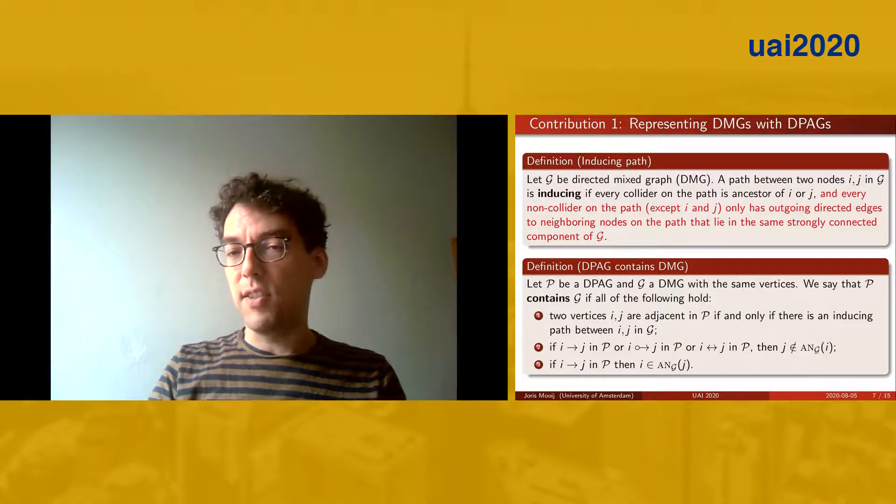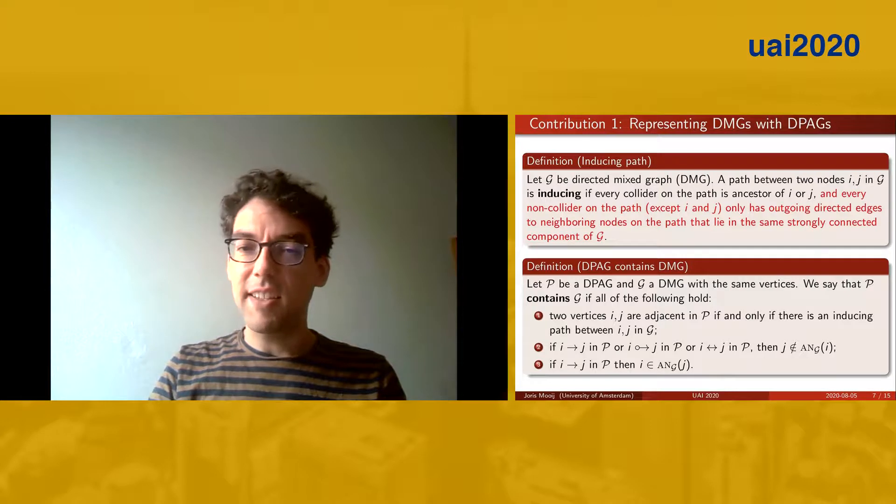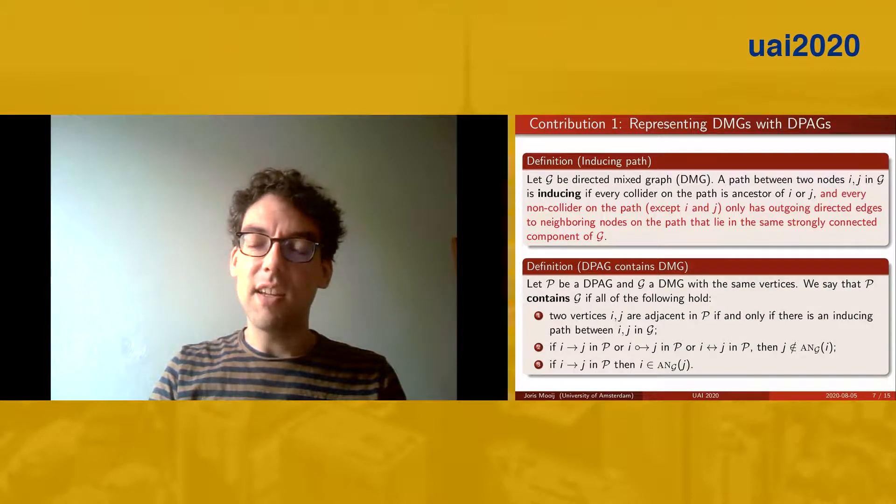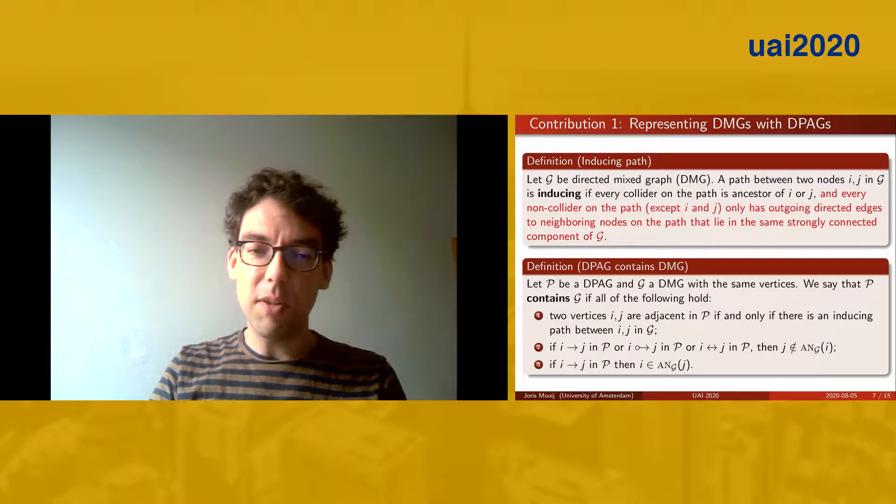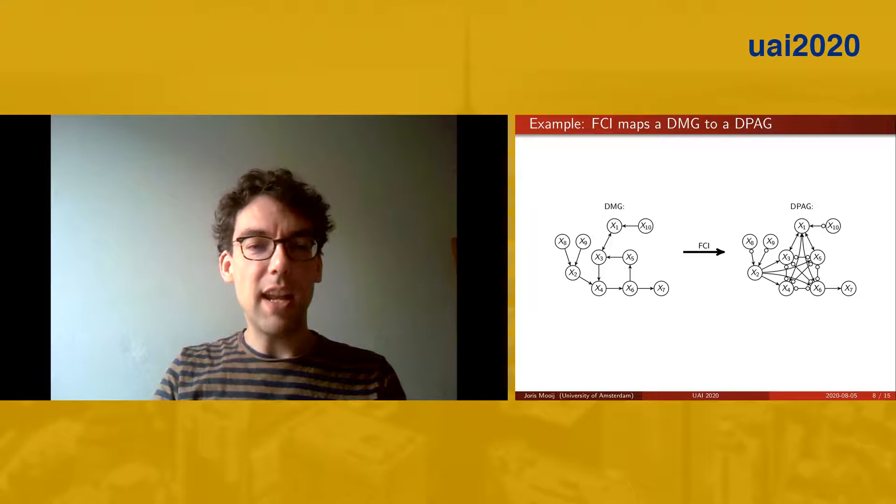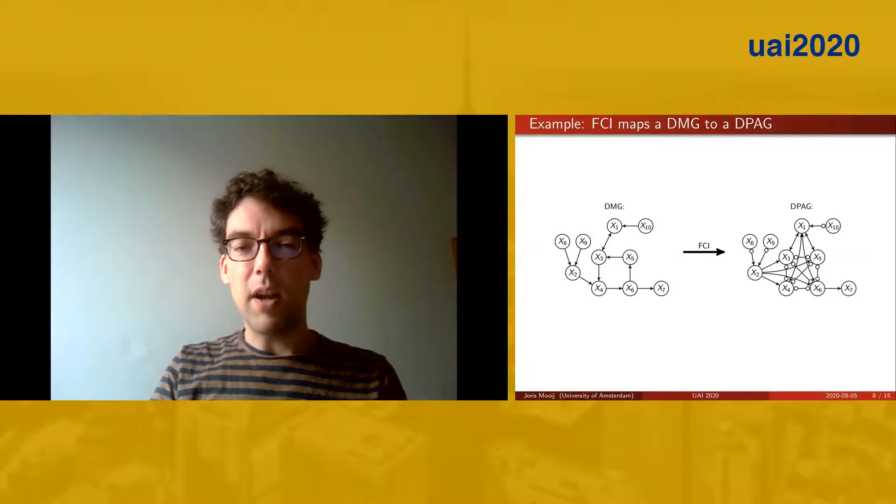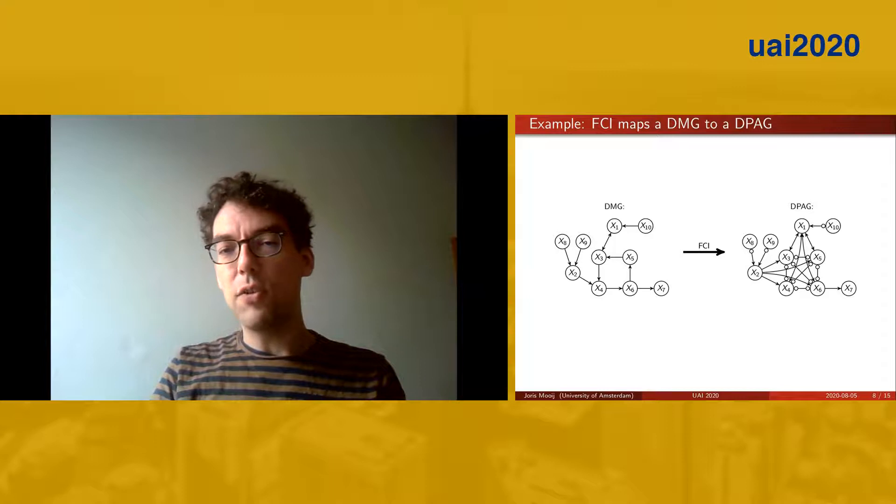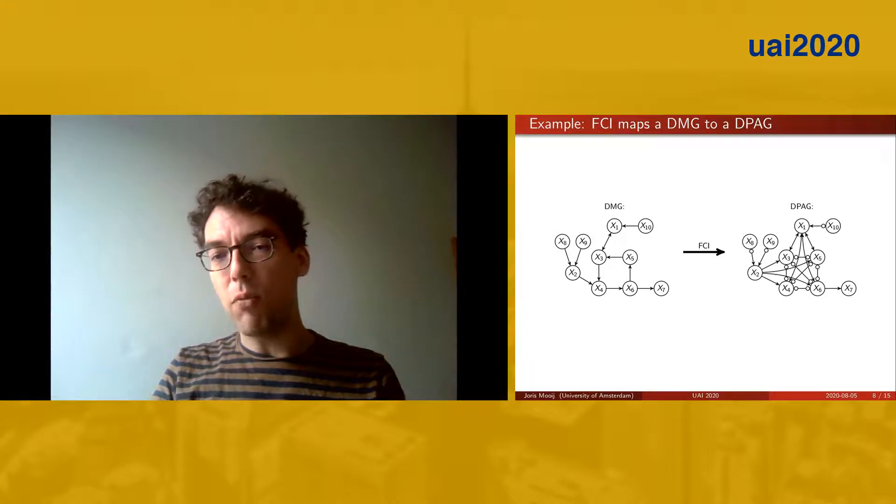This is actually the same as in the acyclic case, except that we make use of this different definition of inducing path. So here you see an example of a directed mixed graph on the left that is mapped by FCI using a sigma-separation oracle to the directed PAG that you see on the right.